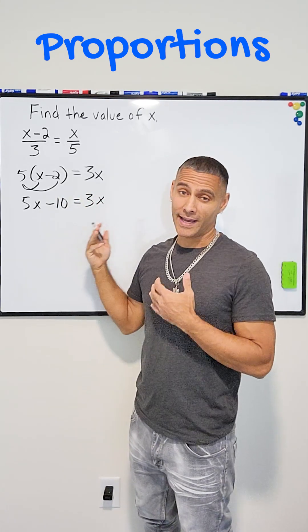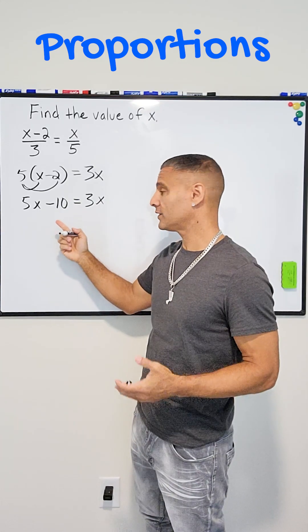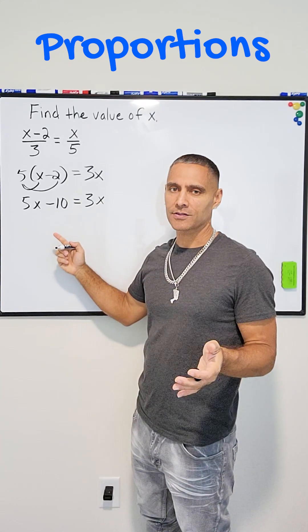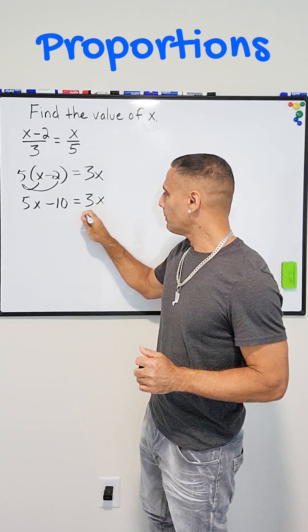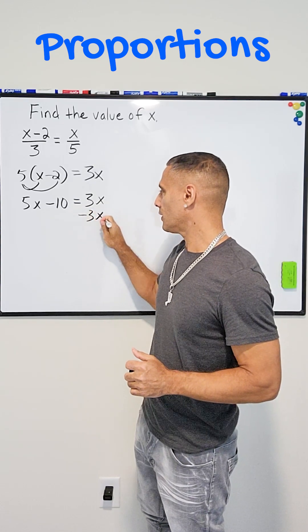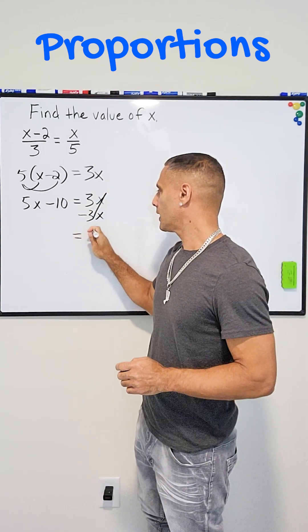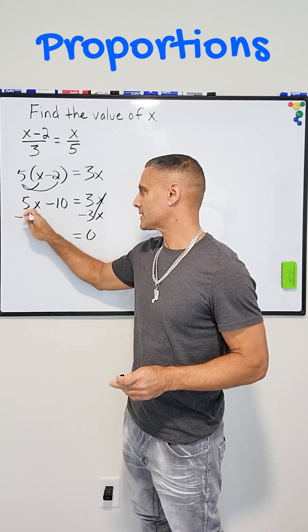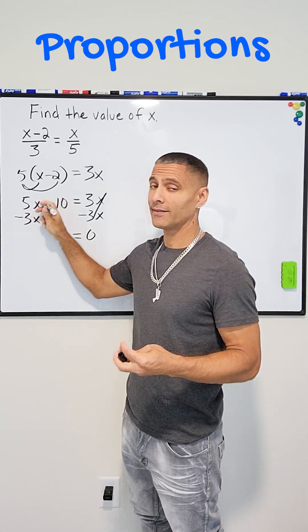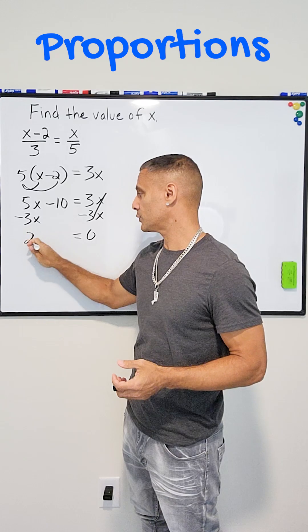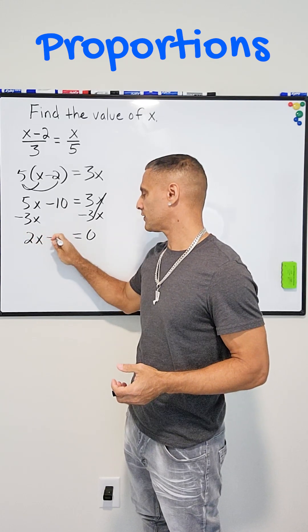Now notice that we have an x term on the right side and the left side, so what we have to do is get those x terms on the same side. So we're going to subtract 3x from itself to turn that into zero, and we balance our equation by doing the same thing on the other side, and 5x take away 3x is, of course, 2x, and we just bring down our minus 10.